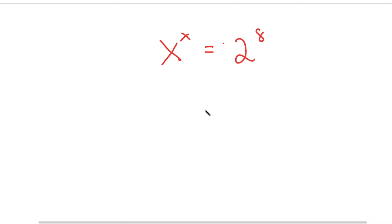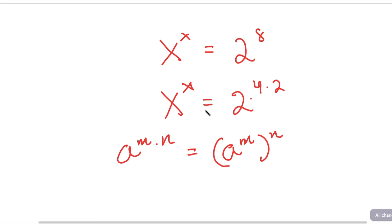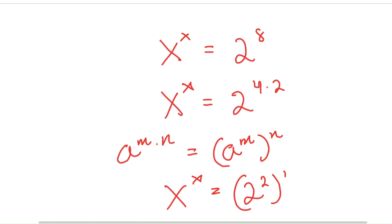To solve this, I'm going to first start by rewriting 2 to the power of 8 as 2 to the power of 4 times 2. If I have something in the form of a to the power of m times n, this is equal to a to the power of m to the power of n. So 2 to the power of 4 times 2, I'm going to rewrite as 2 squared to the power of 4.